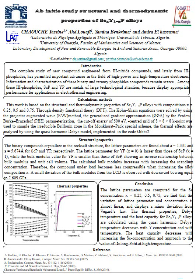The heat capacity increases until reaching the constant value known as the Dulong-Petit limit. In conclusion, the lattice parameters are computed for Sc concentration X equal to 0.25, 0.5, and 0.75. The variation of the lattice parameter with concentration is almost linear and displays a minor deviation from Vegard's law. The thermal properties — Debye temperature and heat capacity — are calculated using the quasi-harmonic Debye model. The Debye temperature decreases with Y concentration and with temperature. The heat capacity decreases with increasing Sc concentration and approaches the Dulong-Petit value at high temperature.